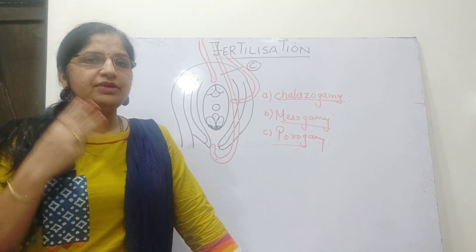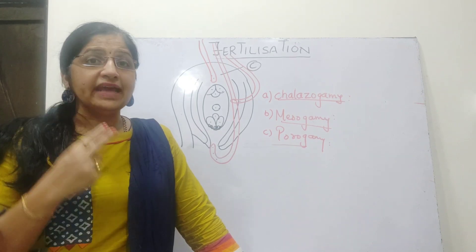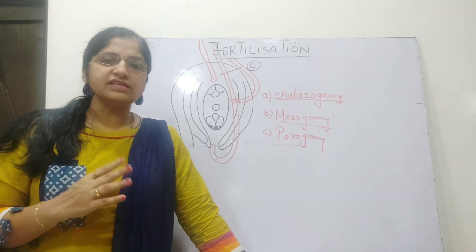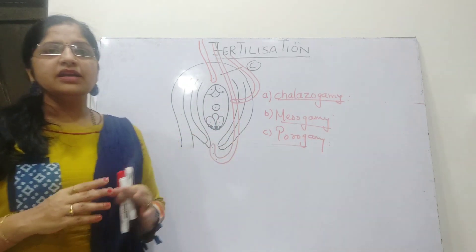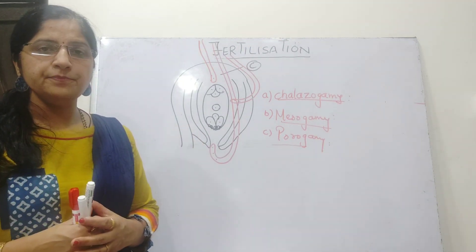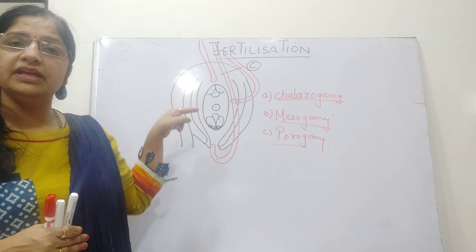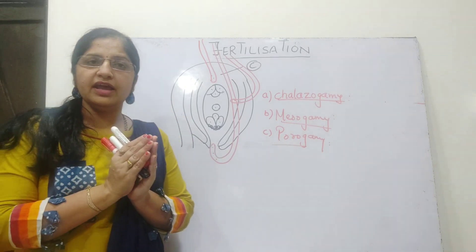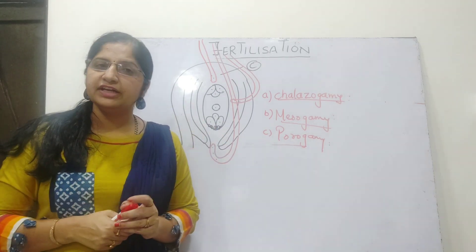In summary, there are three ways a germinated pollen tube can approach the embryo sac: through the chalaza — chalazogamy; through the integuments — mesogamy; or through the micropyle — porogamy. Once the pollen tube has approached the embryo sac, fertilization begins. The male gamete and female gamete must fuse together. The female gamete is present in the embryo sac and the male gamete is present in the germinated pollen tube. Fusion of these haploid gametes is the process called fertilization.